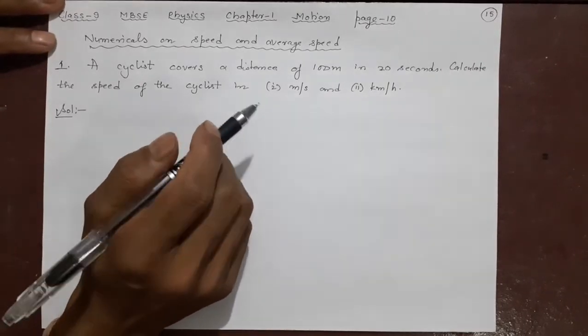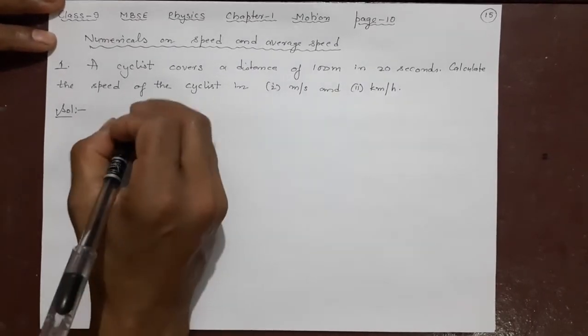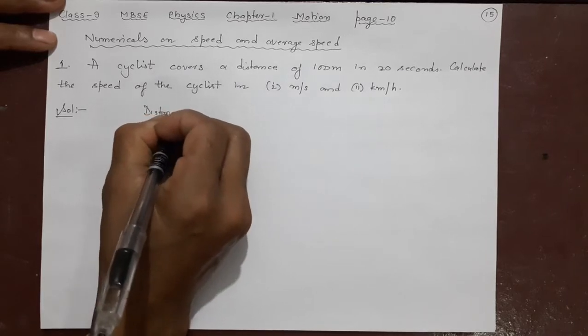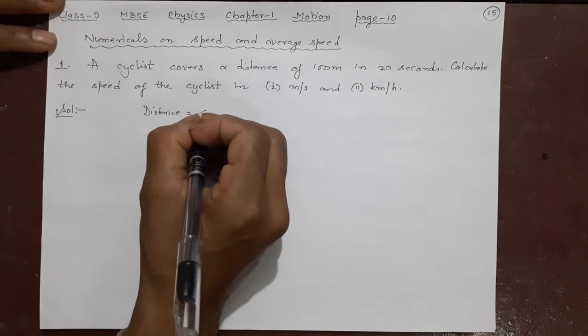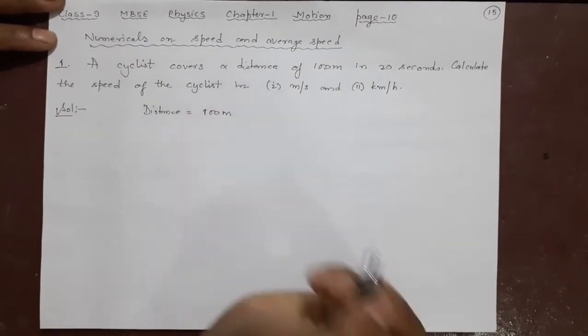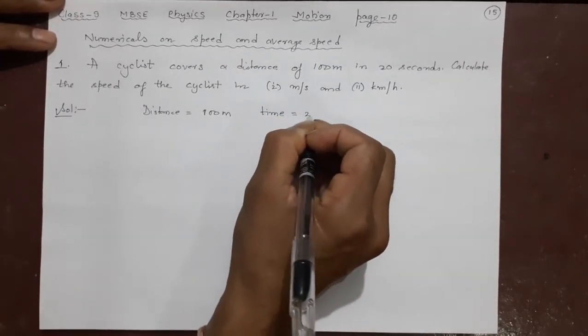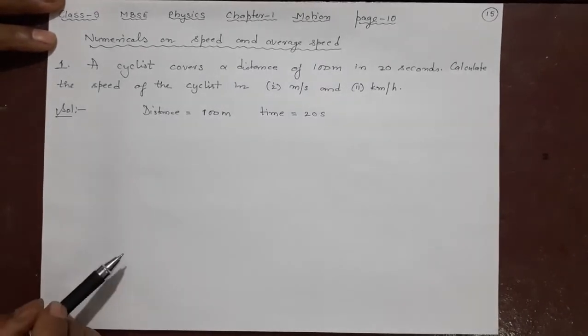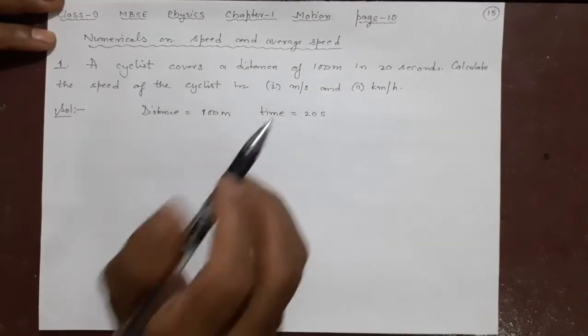So let us see. Very simple. A cyclist covers a distance of 100 meters. The symbol of distance - are we using D or S? Okay, no problem, just write that: 100 meters in 20 seconds. Second means time, so time is 20 seconds. Remember, meter and second are SI units, so no need to change them. Calculate the speed of the cyclist in meters per second. What is the formula of speed?